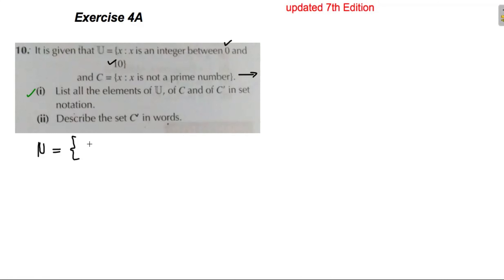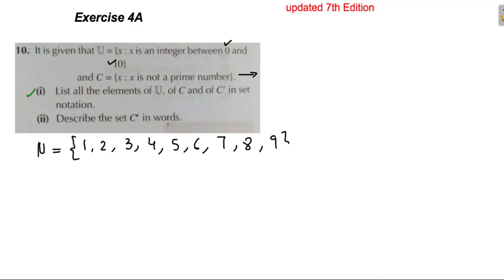The integers between 0 and 10 (not including 0 and 10) are the whole numbers: 1, 2, 3, 4, 5, 6, 7, 8, and 9. This is the complete set of elements of U.